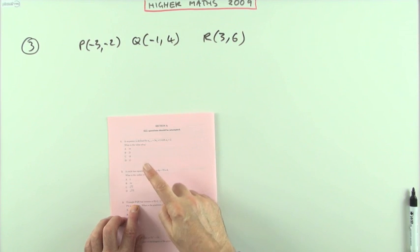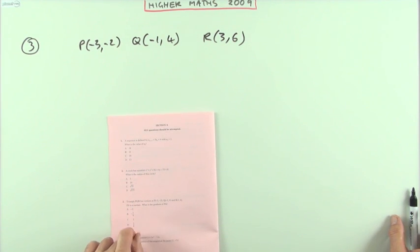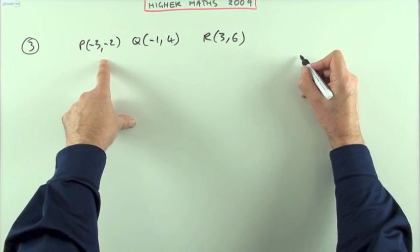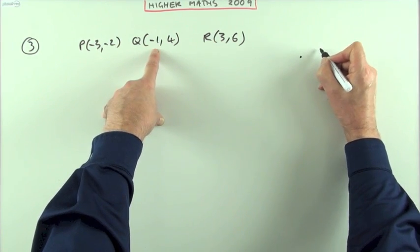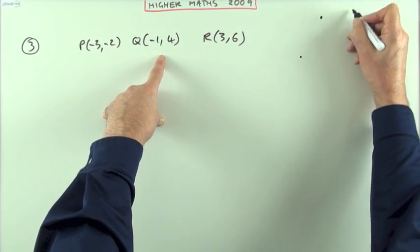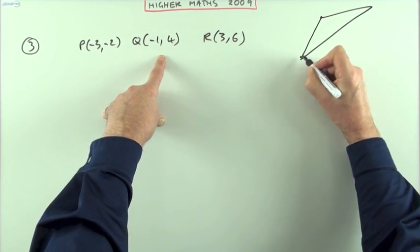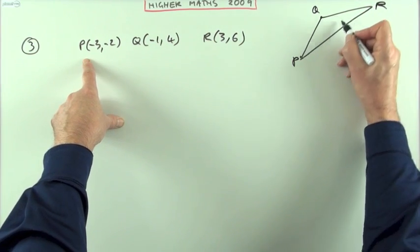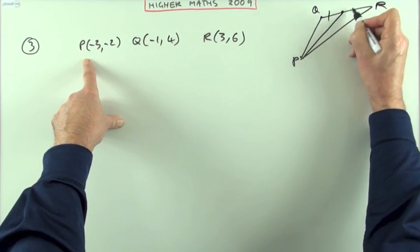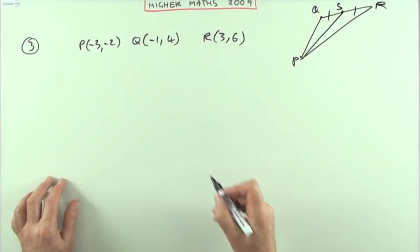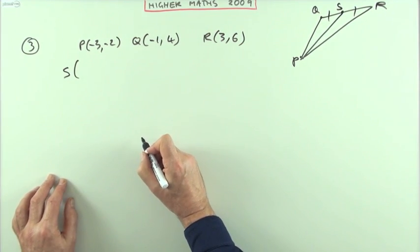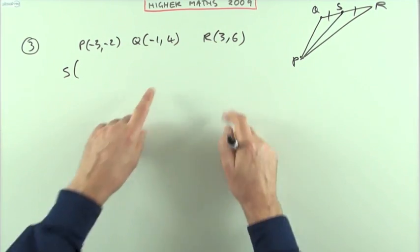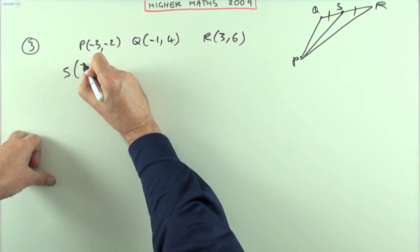Number three: there's a triangle PQR with these vertices. What's the gradient of the median PS? I don't need a sketch for this but I'll put a little sketch down. If P was about three back, two down, Q was about here, and R is three forward, six up — it's a bit messy looking. So we've got P, Q, R. What's the gradient of PS? If PS is a median, that means S must be the midpoint of QR. So I'll find that: S is the midpoint of QR, which is the average of the coordinates.